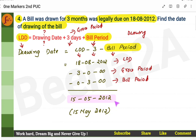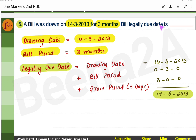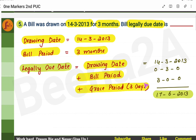So from 18th August 2012, reducing three days and three months, we get 15th May 2012 as the drawing date. Next problem: drawing date is given, bill period is three months — find the legally due date. LDD is the reverse: LDD = Drawing Date + Bill Period + Grace Period. Drawing date is 14th March 2013, bill period is three months, grace period is three days, so LDD is 17th June 2013.